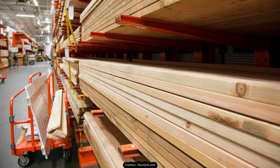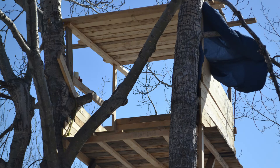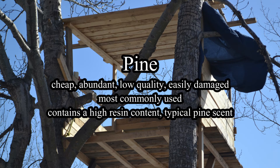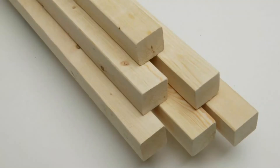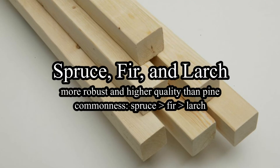In regards to wood quality, the four genera are quite similar. Pine is the cheapest and most abundant, but it is well known for being easily damaged, while the other three are more robust. Pine also contains a lot of resin and has the typical pine scent. Spruce and fir are also relatively common, with larch being the least common.